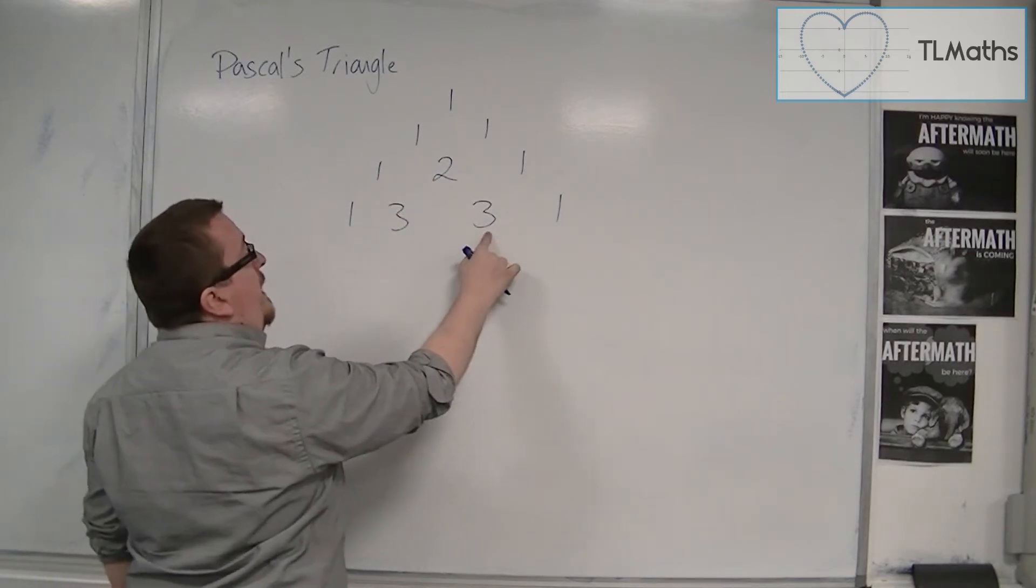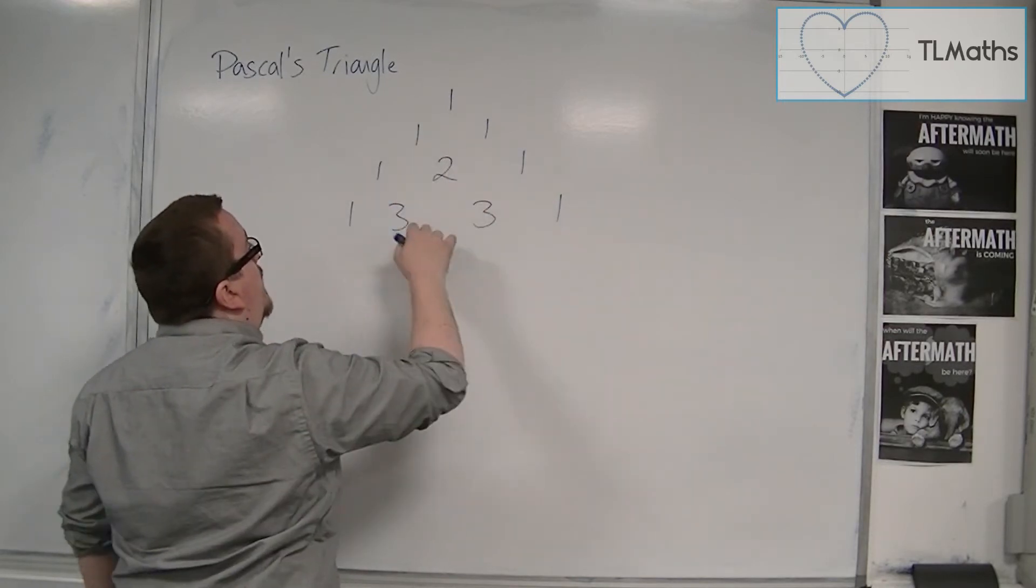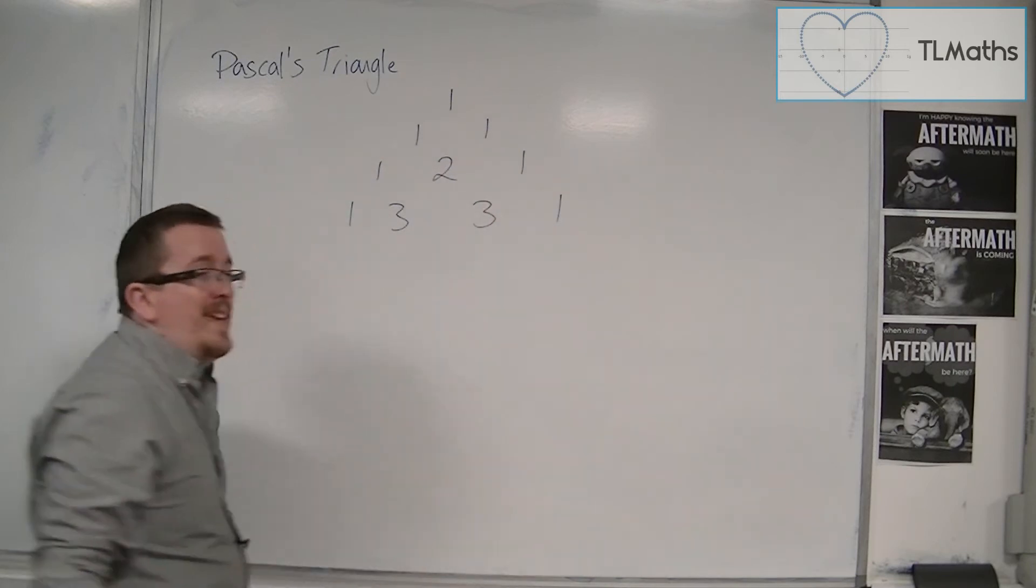So the 3 here is a sum of the 2 and the 1. The 2 is a sum of the 1 and the 1. And the 1s continue down the outside.